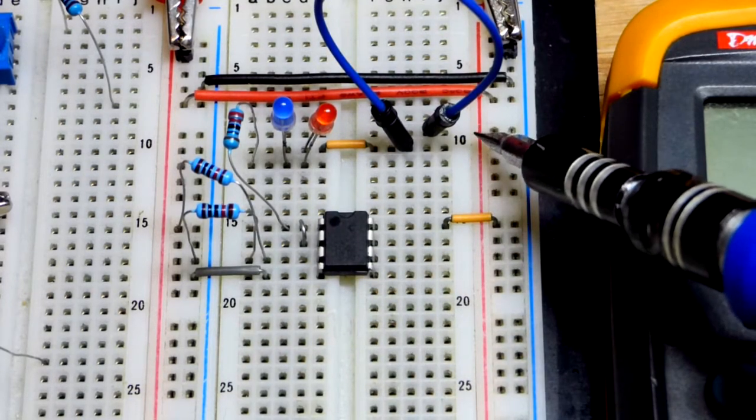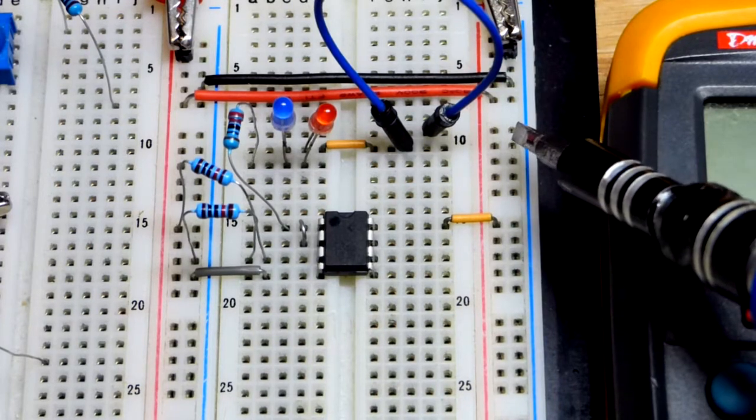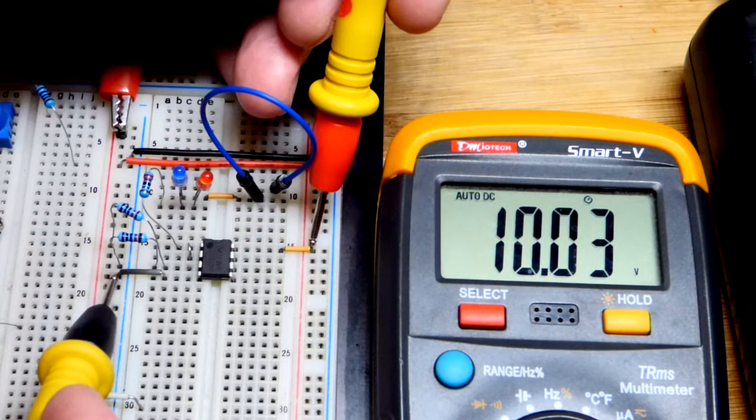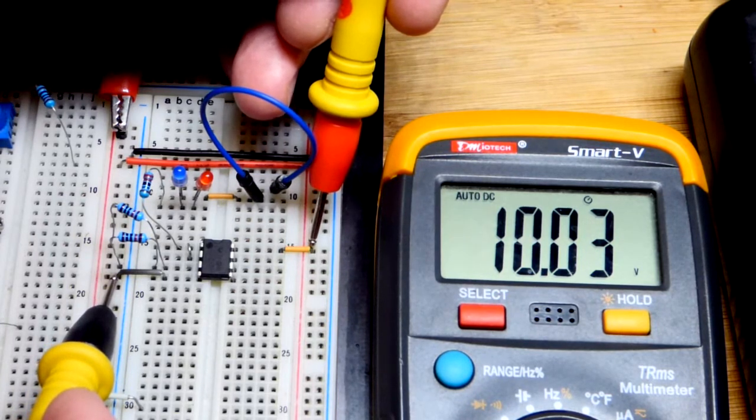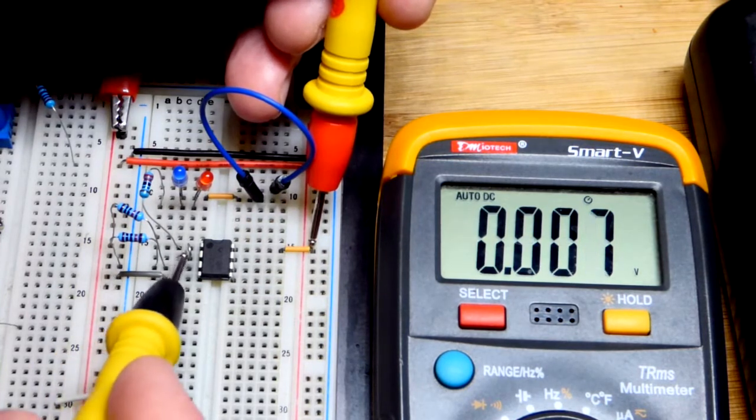In relationship to the output, the positive power supply will be a positive five volts and the negative supply will be a negative five volts. Here you can see at the power supply we have a 10-volt difference.